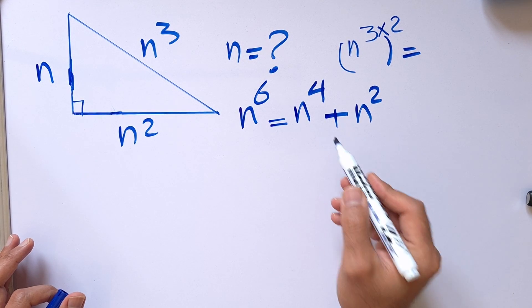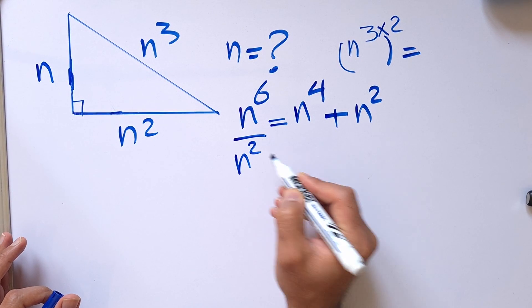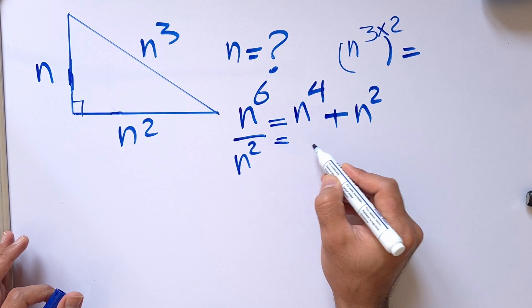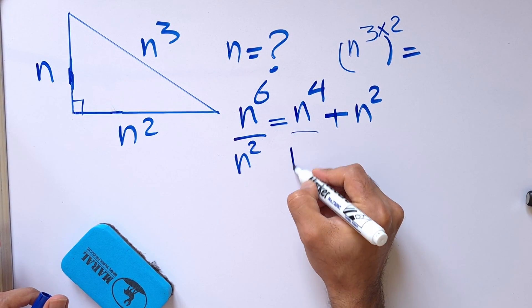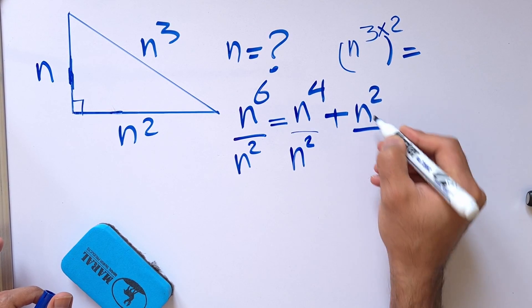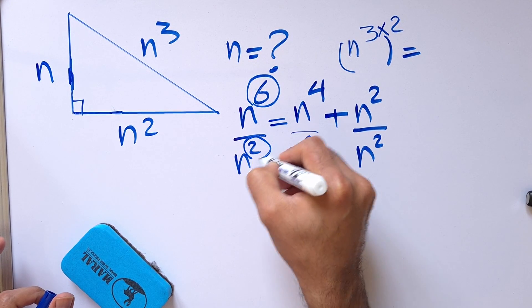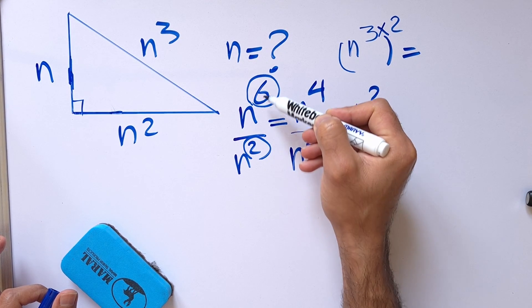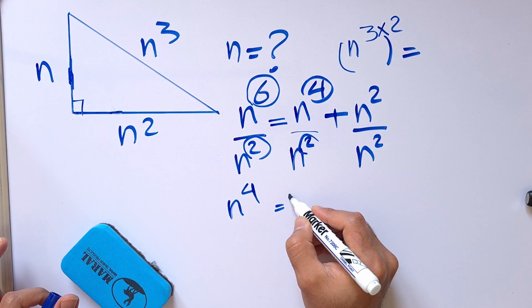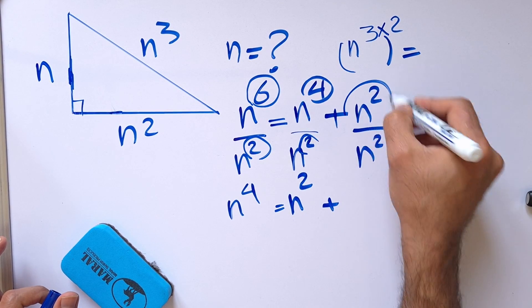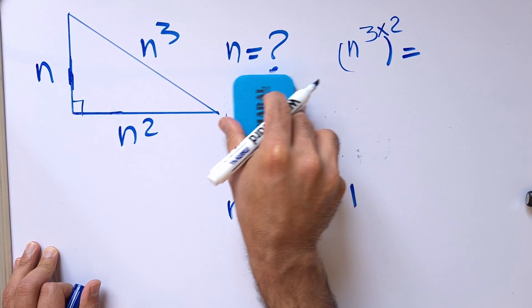Now that we have the equation, let's solve it for n. Let's divide each term by n squared. Using the property of exponents where the bases are the same, we subtract the exponents: 6 minus 2 is 4, and 4 minus 2 is 2. So we get n to the 4 equals n squared plus 1.